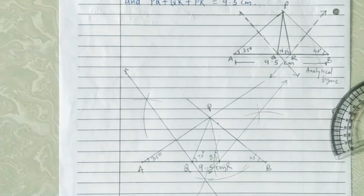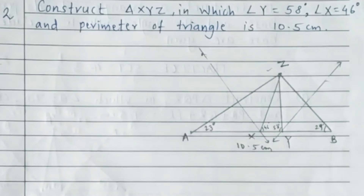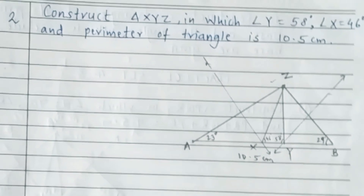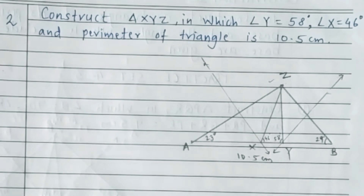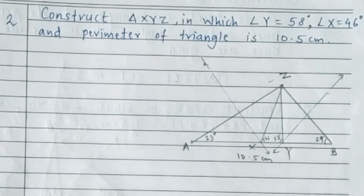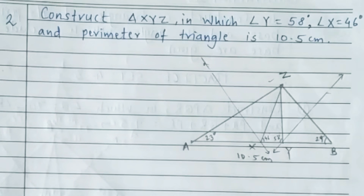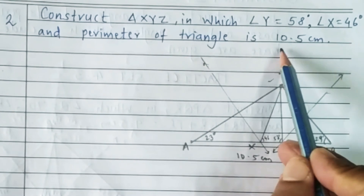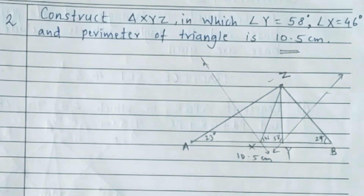Hence we have constructed triangle PQR. Second example: construct triangle XYZ in which angle Y is equal to 58 degrees, angle X is equal to 46 degrees, and the perimeter of the triangle is 10.5 centimetres.